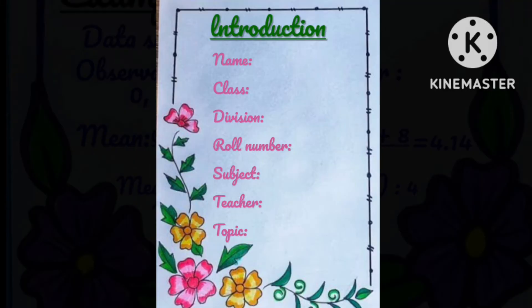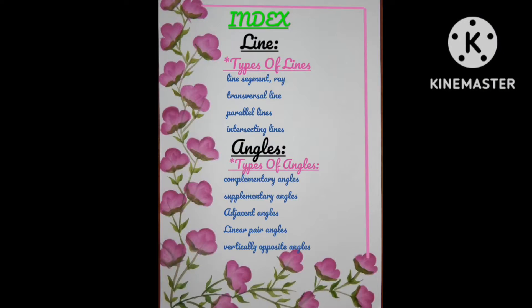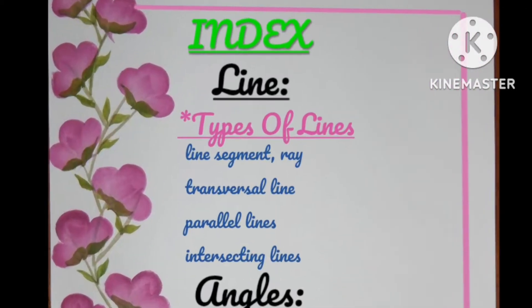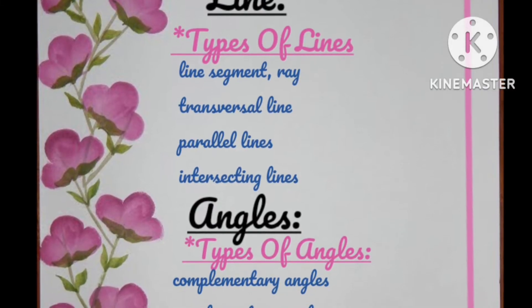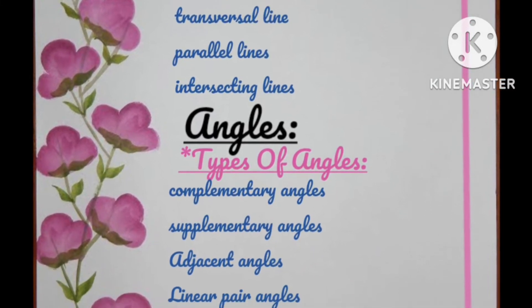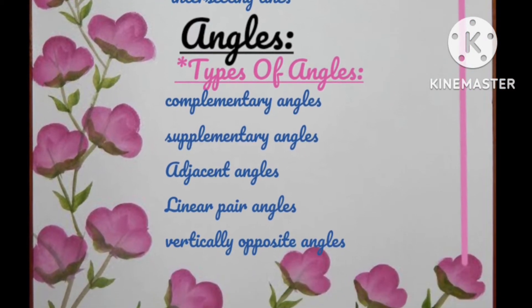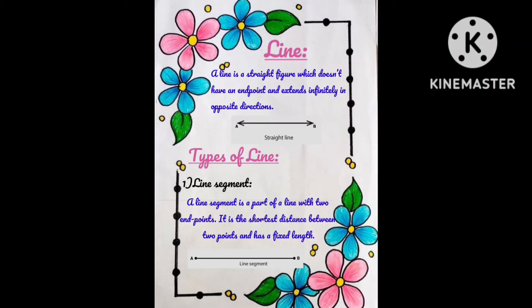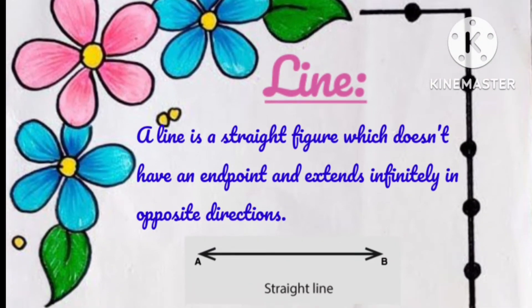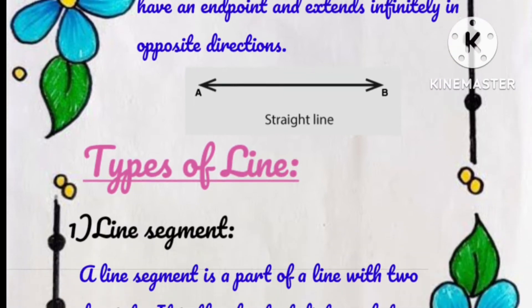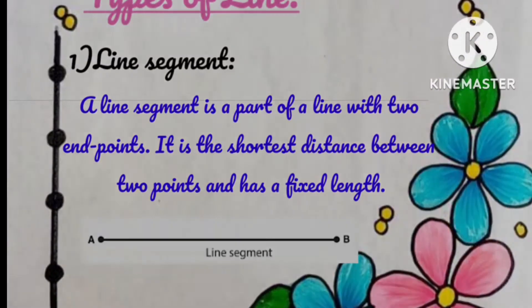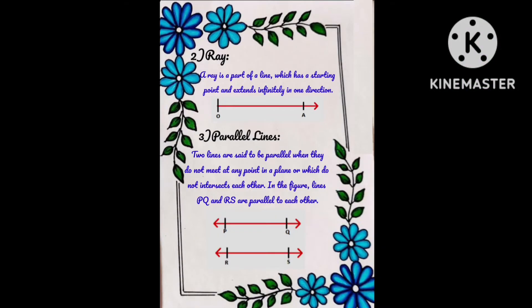The second project is Lines and Angles. The first page is introduction: name, class, division, role number, subject, teacher, and topic. The index covers: line, types of lines, angles, types of angles. Under types of lines: line segment, ray.